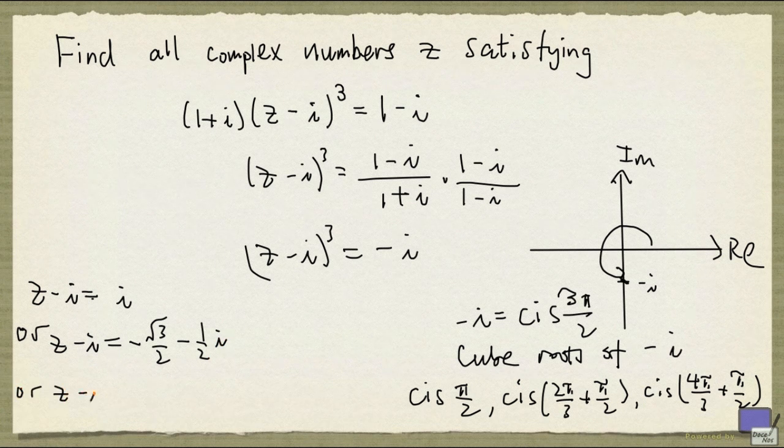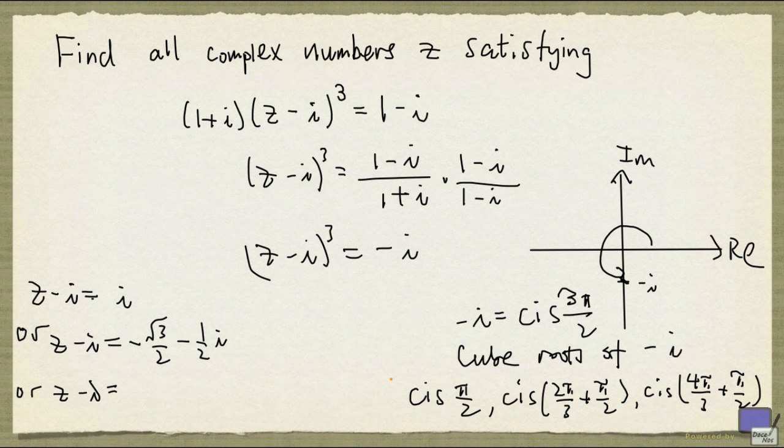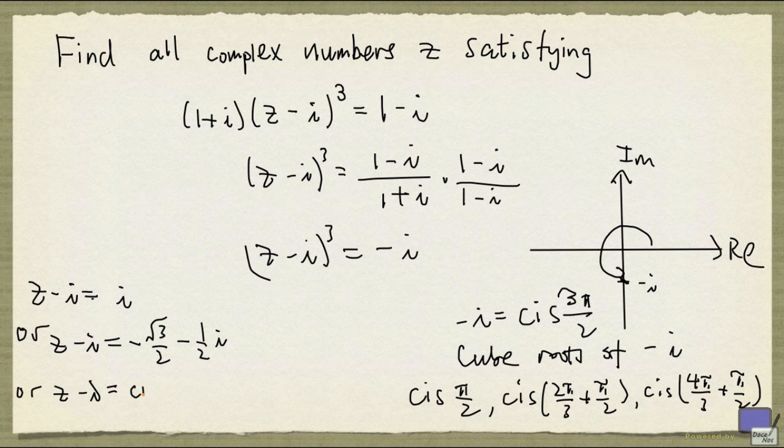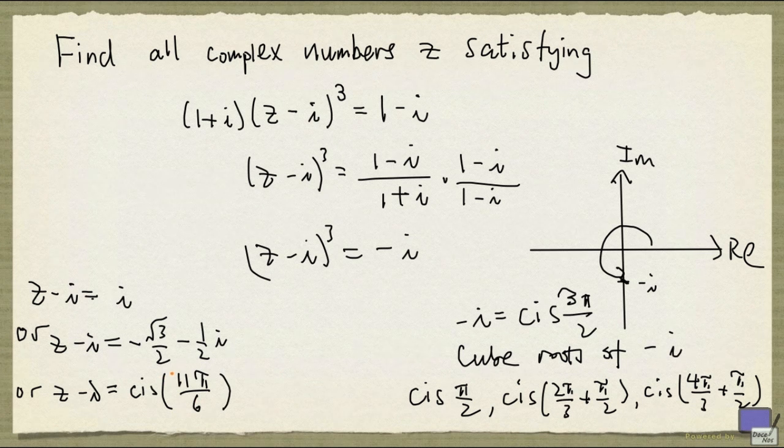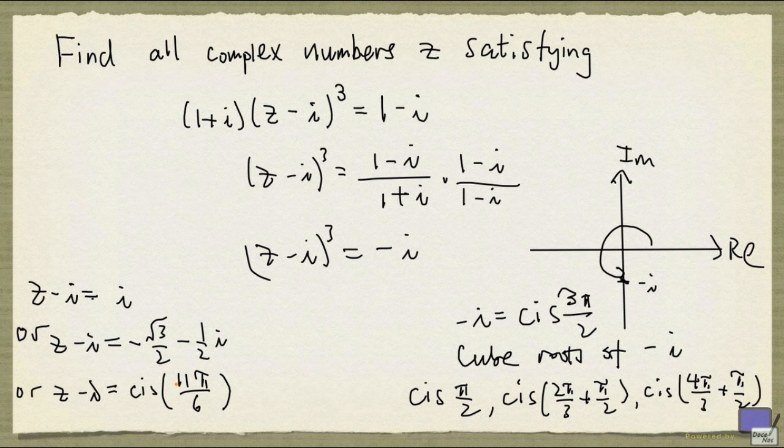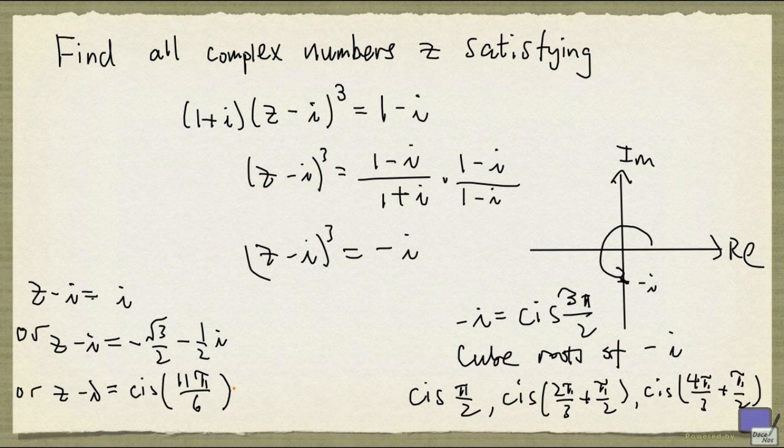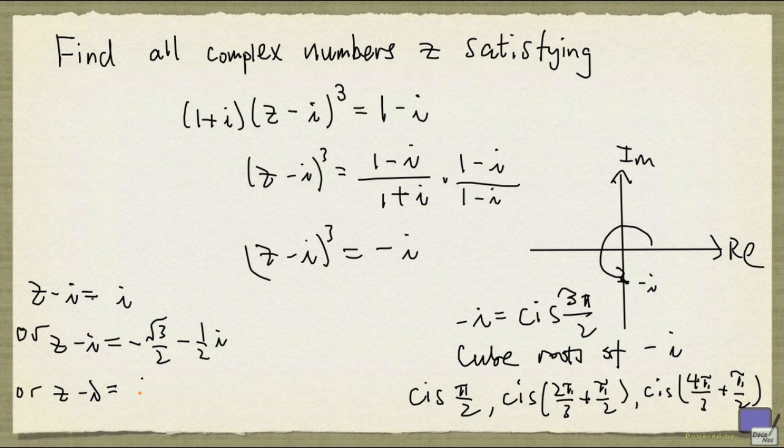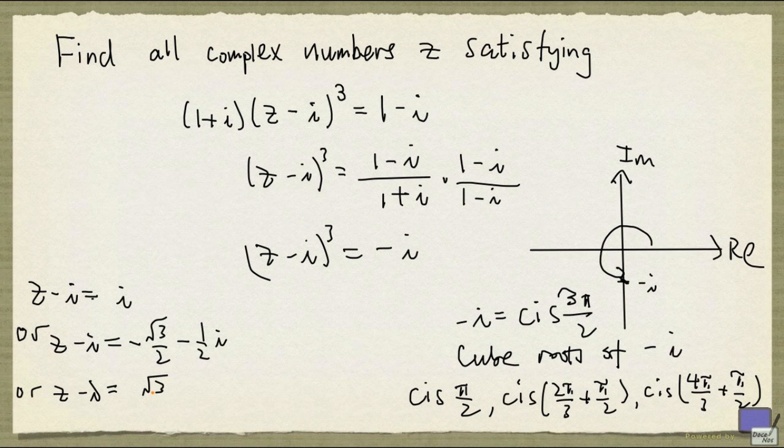Or z minus i is equal to the third cube root, which is cis 11pi over 6. And the cosine of 11pi over 6 is square root of 3 over 2, and the sine of 11pi over 6 is minus 1 half. So this is the same as square root of 3 over 2 minus 1 half i.